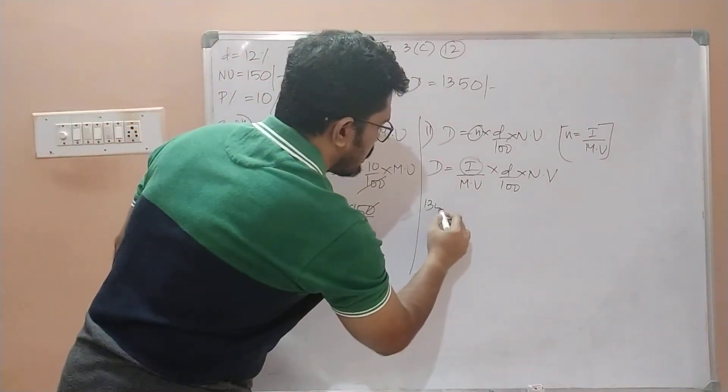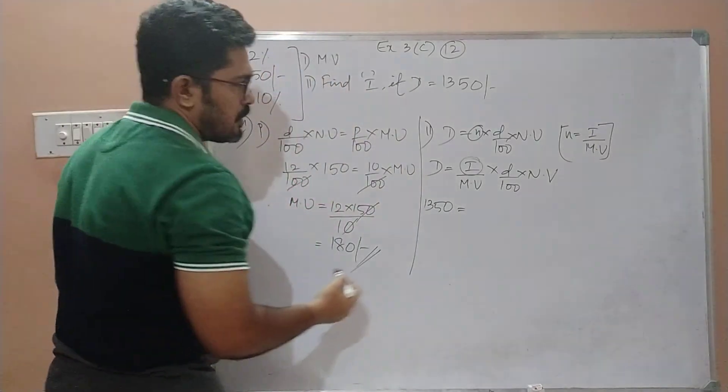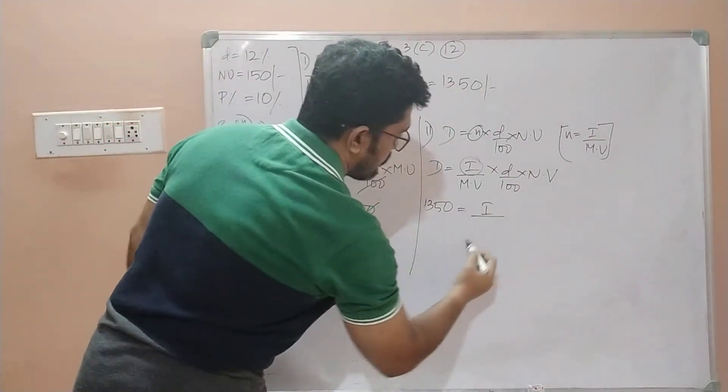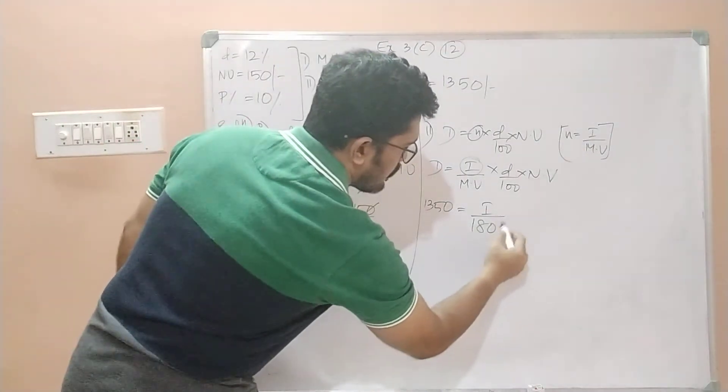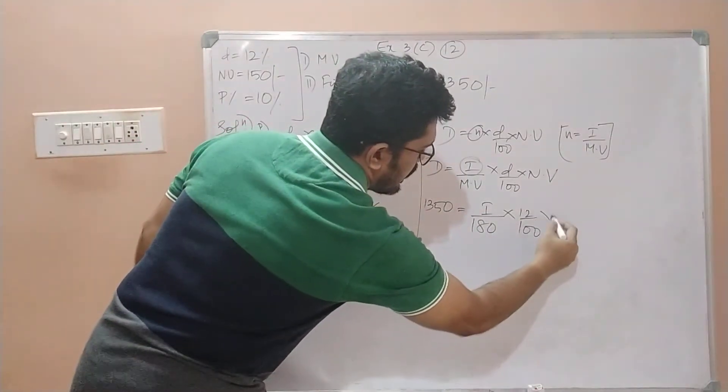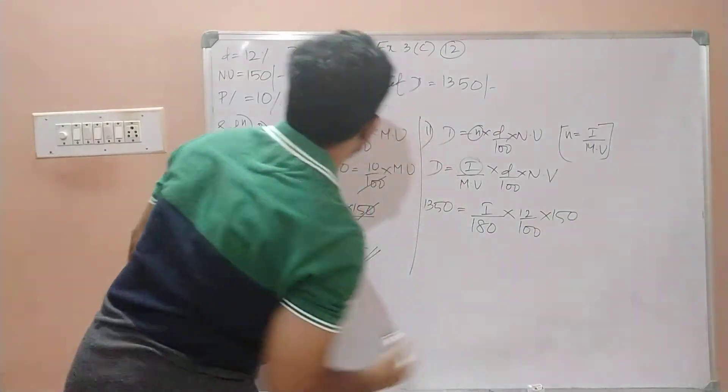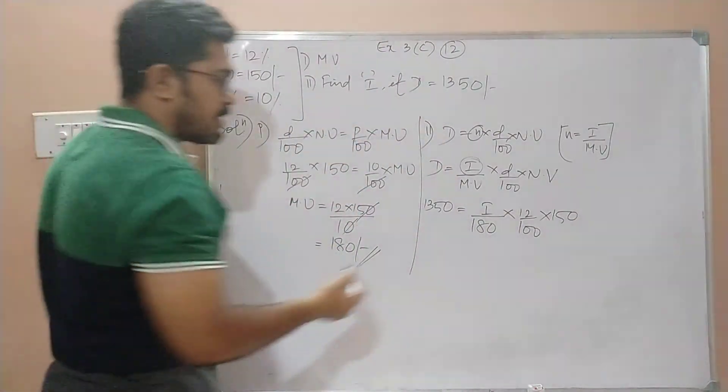d is 1350, which is equal to i divided by the market value 180 × 12/100 × 150. Now let us solve this.